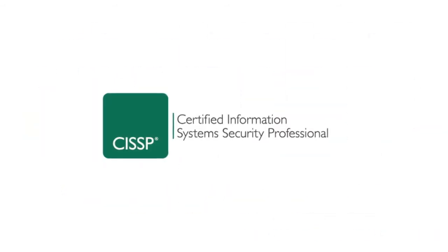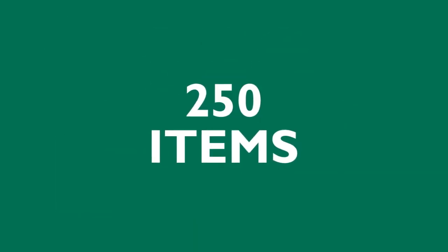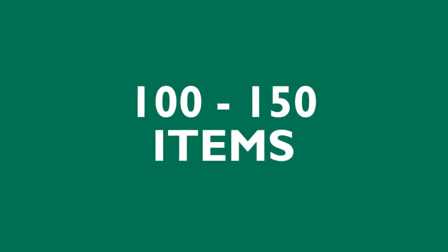The CISSP CAT format allows us to cut exam administration time from 6 hours to 3 hours, reduce the total number of exam items from 250 to as few as 100, and no more than 150.